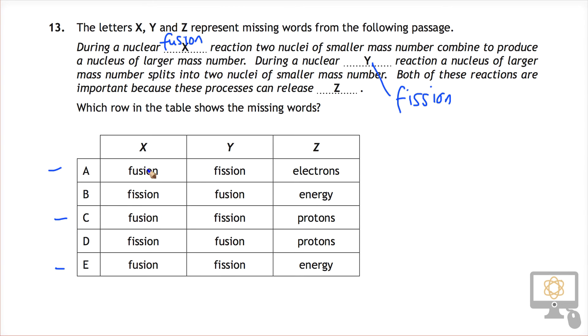And so that would mean now that A could still be a possibility, C could still be a possibility, and E could still be a possibility.